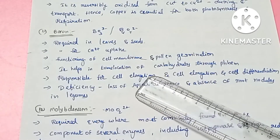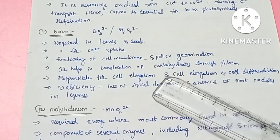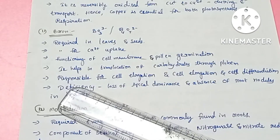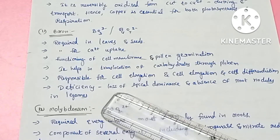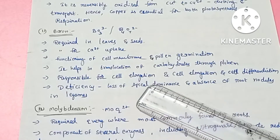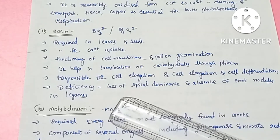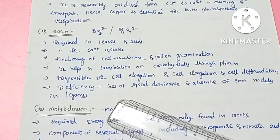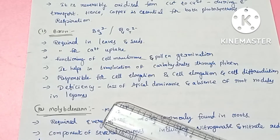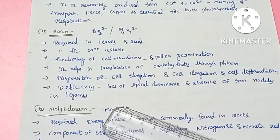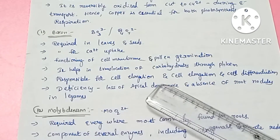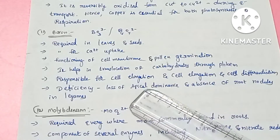Boron is also essential for carbohydrate metabolism, cell elongation, and cell differentiation. In plants, apical dominance refers to the dominance of the central stem over lateral branches.